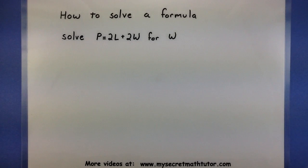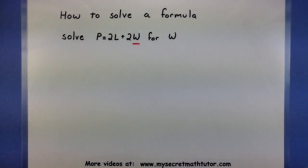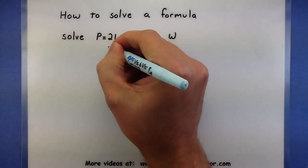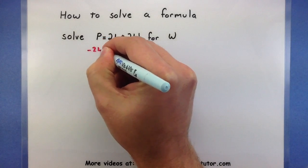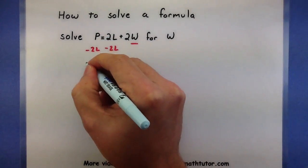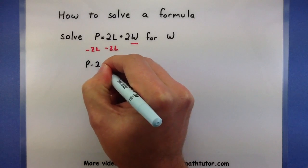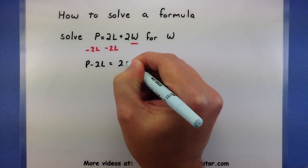In this first example, I have p equals 2l plus 2w, and what we're trying to do is solve it for the variable w. My goal is to try and get w all by itself. To start this off, I'm going to subtract 2l from both sides. So I'll have p minus 2l is equal to 2w.